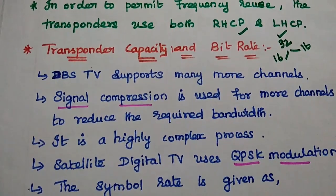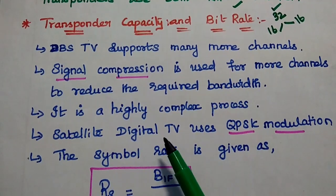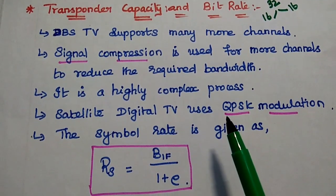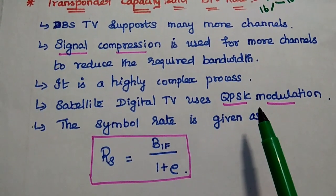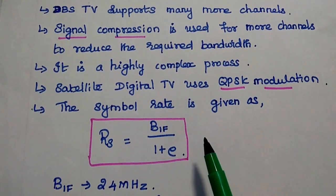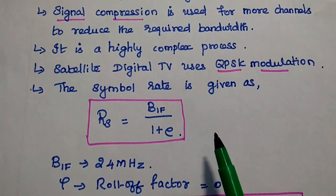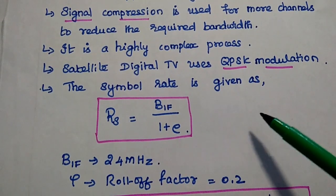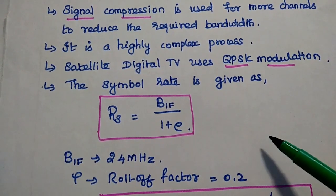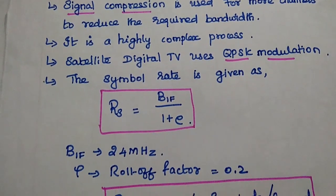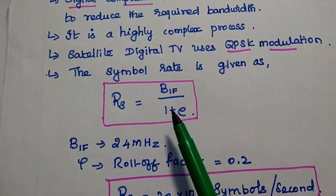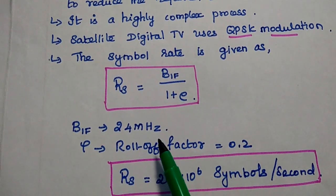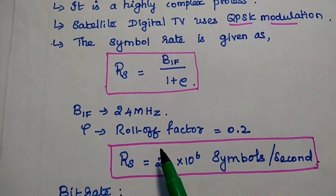The next parameter is transponder capacity and bit rate. DBS TV supports many channels at a time, so signal compression is used to reduce the required bandwidth. Since QPSK modulation is used in digital TV systems, the symbol rate and bit rate are important for signal compression. The symbol rate is given as the intermediate frequency bandwidth divided by (1 + ρ), where the IF bandwidth is 24 MHz and ρ is the roll-off factor with a value of 0.2.